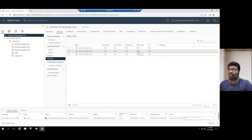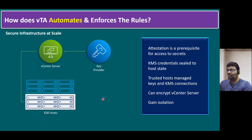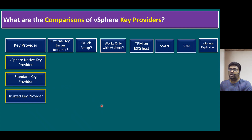The current latest TPM version is 2.12. Now another key point: how does VTA — vSphere Trust Authority — automate and enforce rules? The third key provider is the Trusted Key Provider, which uses the VTA host — vSphere Trust Authority host. This is the third method we can use for attestation. The VTA host pulls keys from the key provider and helps attest and validate all ESXi hosts. Attestation is a prerequisite for access to secrets, KMS credentials are sealed to host state, and trusted hosts are managed by keys and KMS connections. Using the VTA host, we can also encrypt the vCenter server and gain isolation. This VTA cluster should be kept in an isolated state.